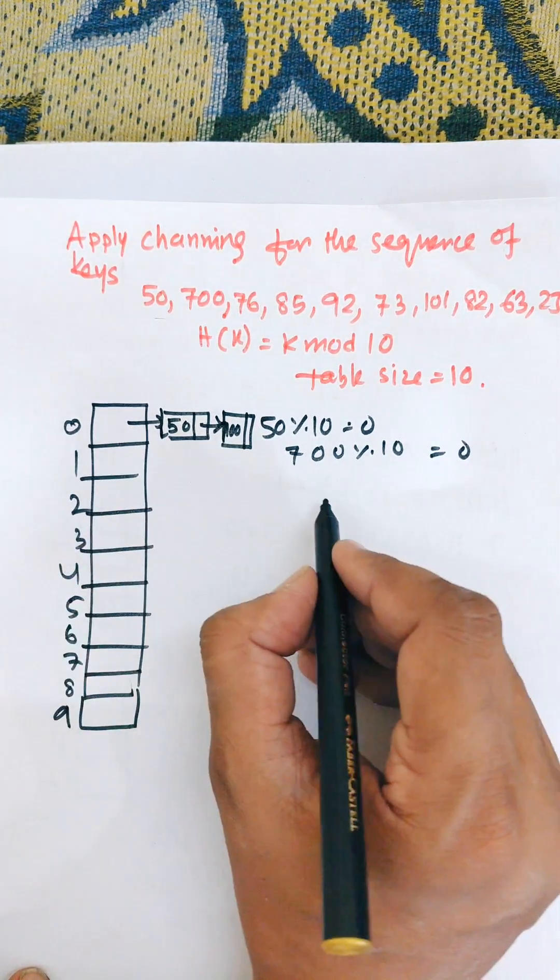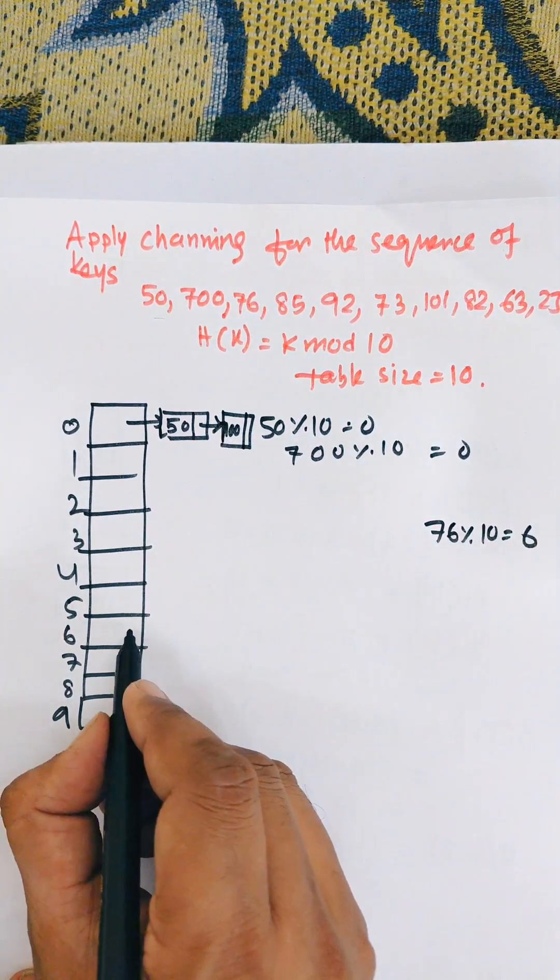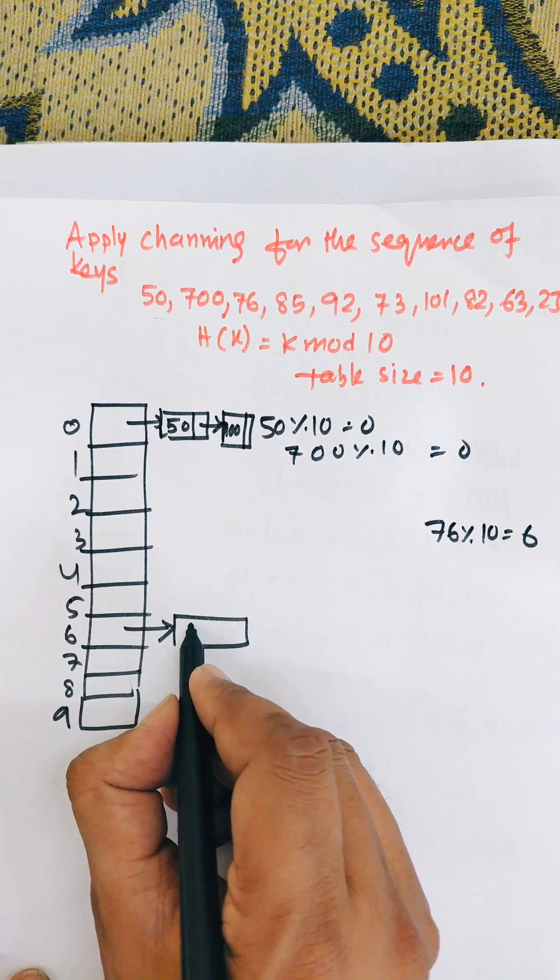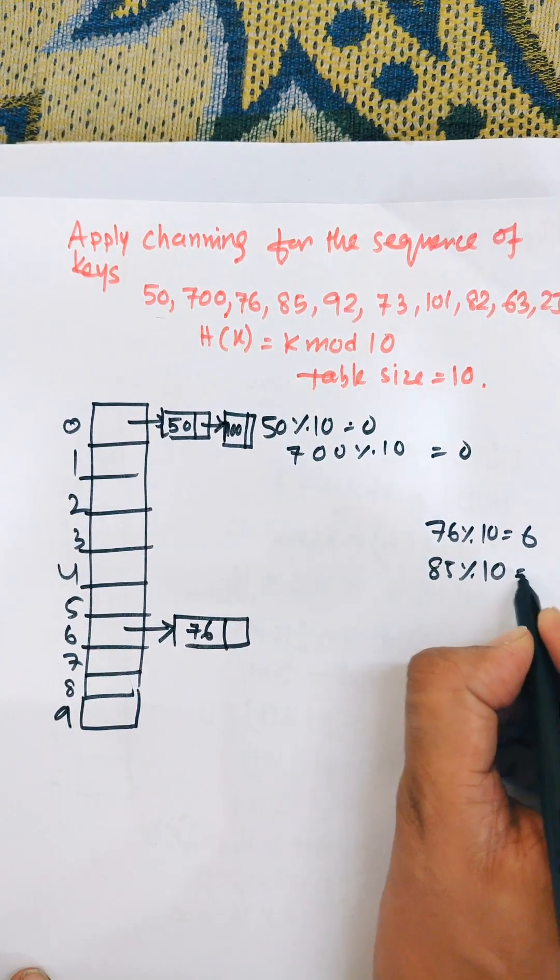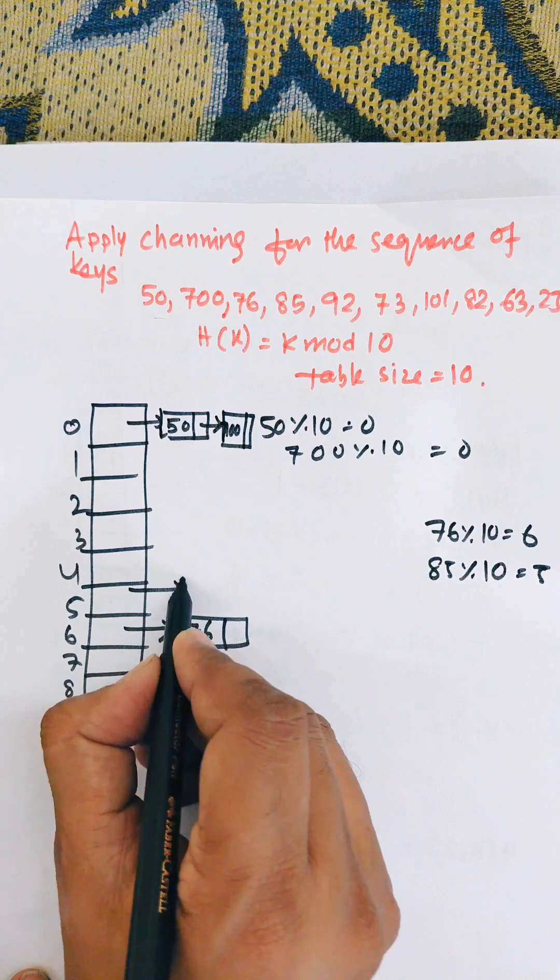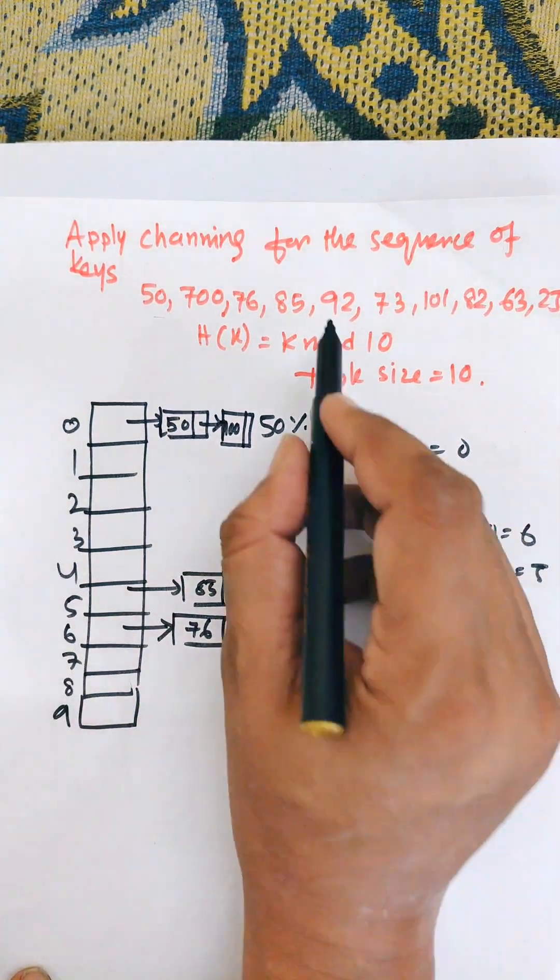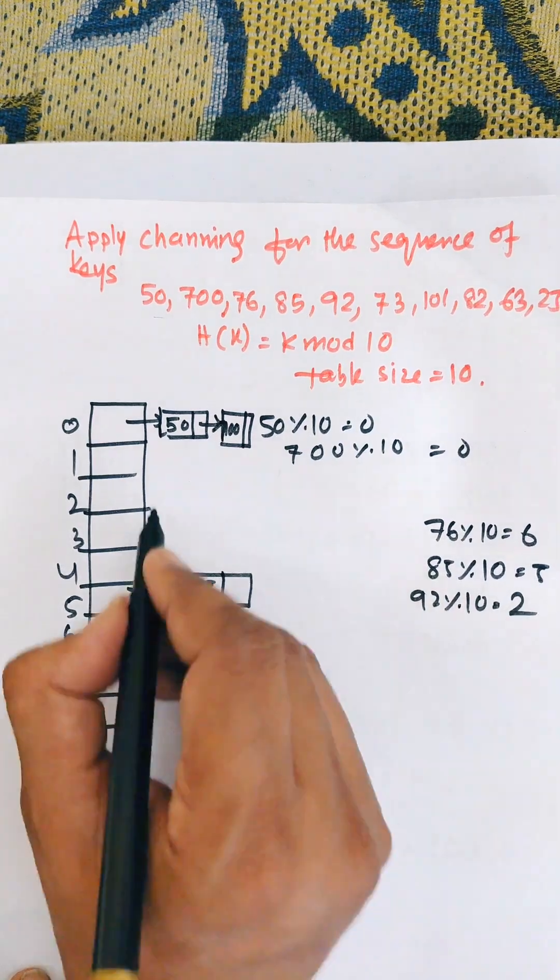Next one is 76 mod 10 means 6. It will store the first node that points to the 6 memory location, that is 76. Next, 85 mod 10 equal to 5, so 5 points to the 85 location with value 85. Then 92 mod 10 equal to 2, so there is a node 92 at location 2. And 73 mod 10 equal to 3, so that is 73.